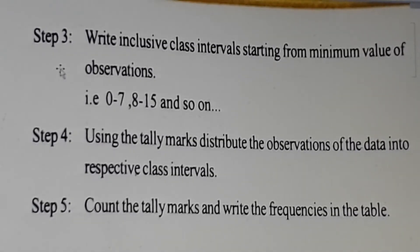Step 3: Write inclusive class intervals starting from minimum value of observations, i.e., 0 to 7, 8 to 15 and so on. Inclusive class intervals means 0 to 7, 8 to 15, where 7 and next 8 is given.